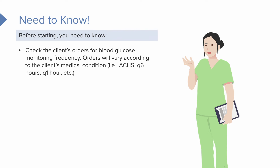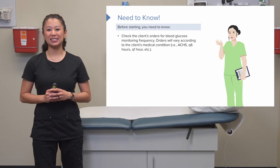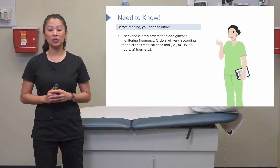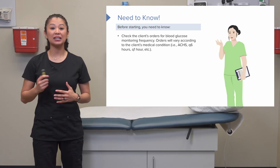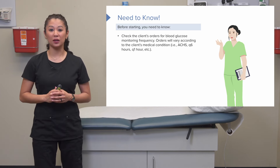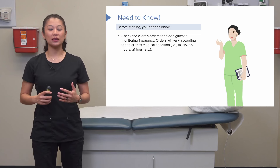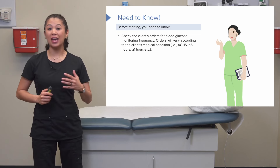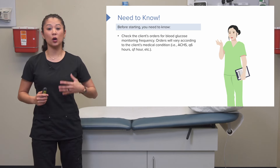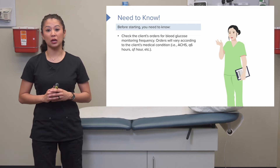Keep in mind that the client's order is going to vary quite a bit — it's going to be relevant to their condition. For a diabetic patient, for example, we may obtain this level ACNHS, otherwise known as before meals and at bedtime. You may also see an order for a blood glucose level every six hours, which could potentially be because your patient is on ongoing tube feeding or nutritional supplements.